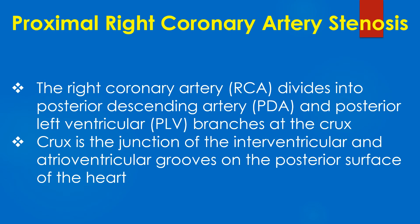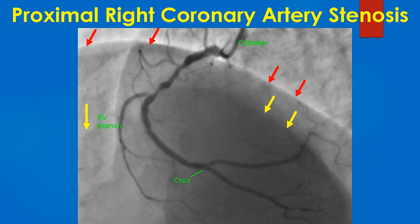The right coronary artery divides into posterior descending artery and posterior left ventricular branches at the crux. The crux is the junction of the interventricular and atrioventricular grooves on the posterior surface of the heart. The artery which crosses the crux to the opposite side is called the dominant artery. In this case, it is a right dominant system.